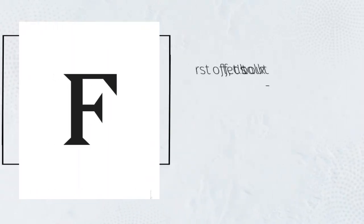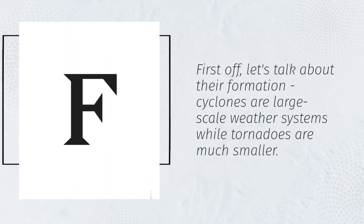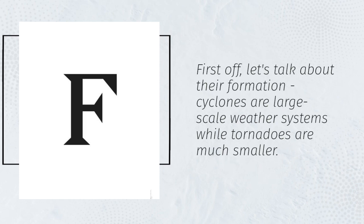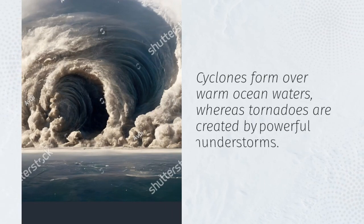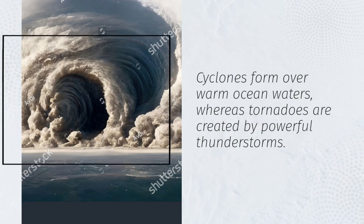First off, let's talk about their formation. Cyclones are large-scale weather systems while tornadoes are much smaller. Cyclones form over warm ocean waters, whereas tornadoes are created by powerful thunderstorms.